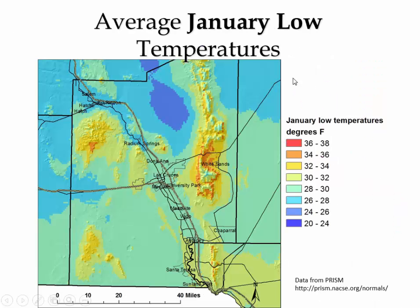We also like to talk about the lows and highs. Here's the average low temperatures across Dona Ana County, colored from 36 to 38 degrees all the way down to 20 to 24 degrees. The higher elevations are slightly cooler, with the coolest area over on the Organ Mountains. In Las Cruces we're in the range of about 24 to 28 degrees — around 26 to 28 — for our average low temperatures.